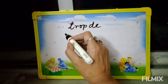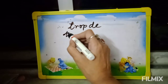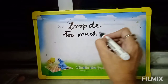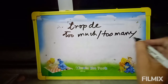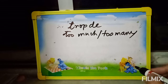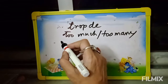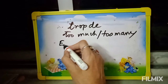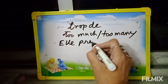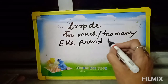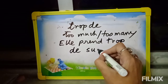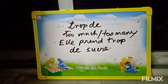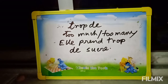Next one: 'Trop de.' English meaning: too much or too many. Example: She takes too much sugar.